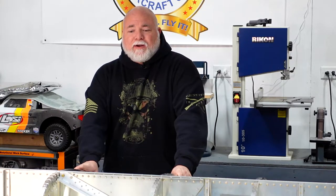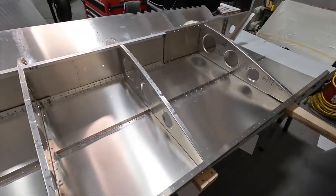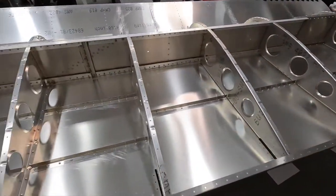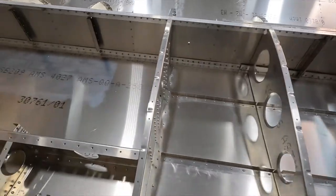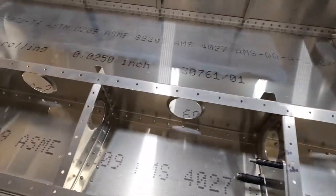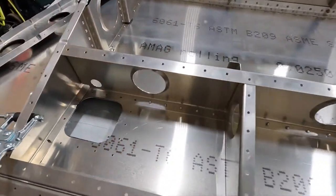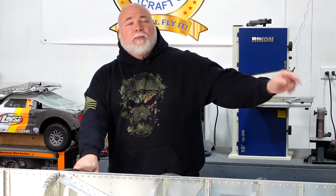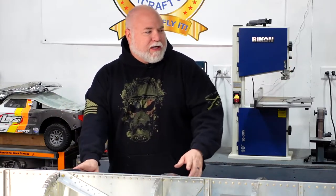Back at it on the right wing here and pretty much got all of the holes drilled out, got most everything deburred. We did have a little mix-up on the root rib. These are the two that surround the fuel tank and there's a left and a right for both the left and right wing and I flip-flopped two of those ribs.